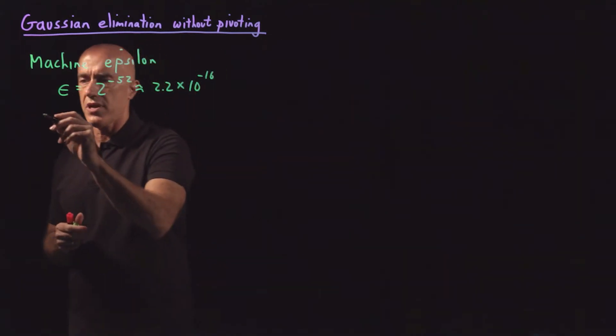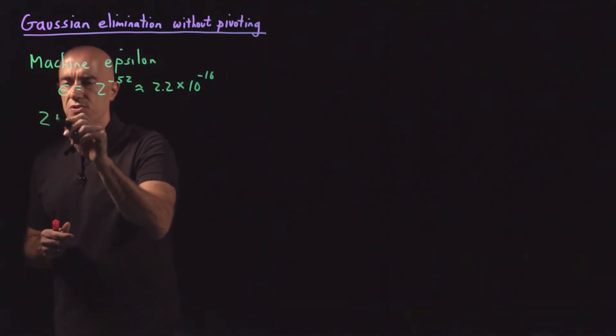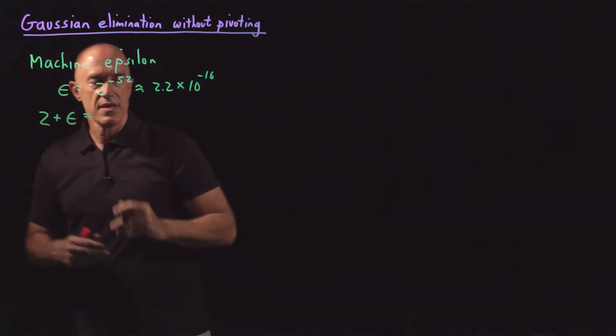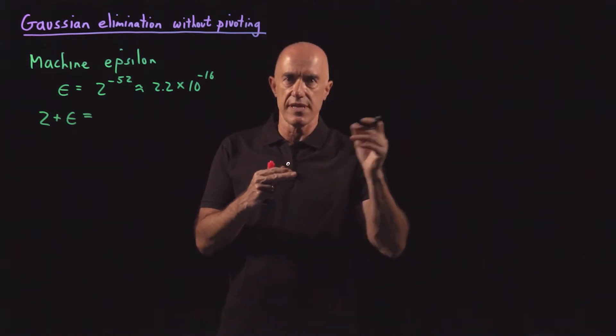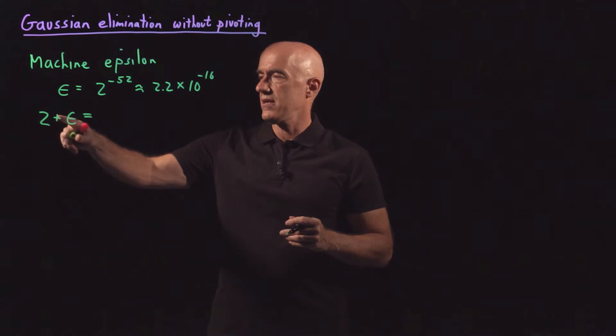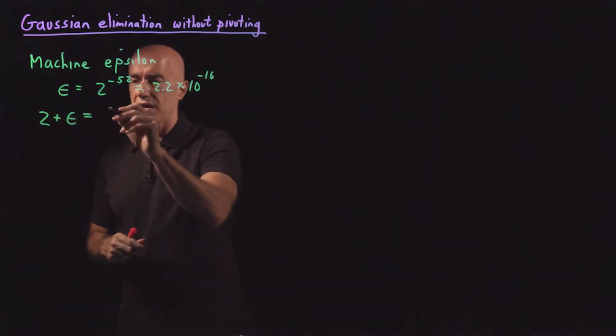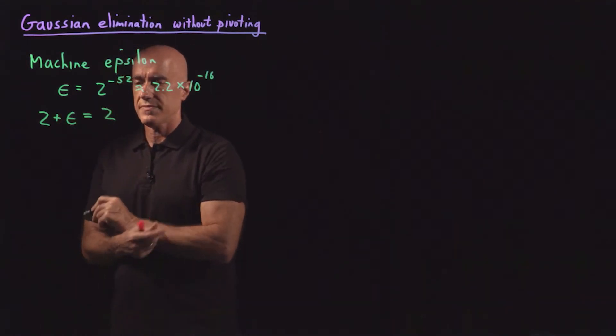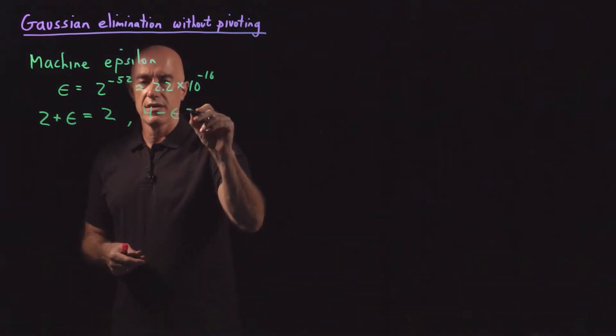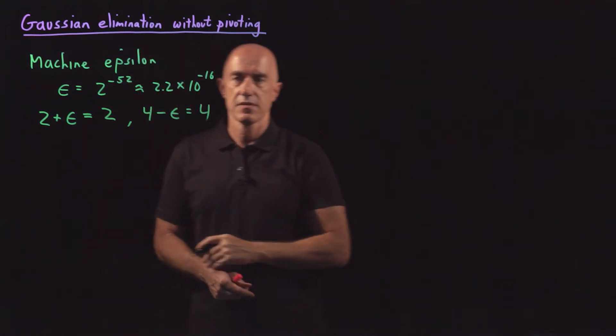In the computer if we try to compute 2 plus machine epsilon, computationally because the distance between two and the next largest number is twice machine epsilon, 2 plus machine epsilon will just give us 2. Similarly, 4 minus machine epsilon will give us 4.